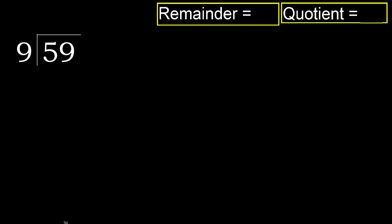59 divided by 9. 5 is less, therefore next. 59 is not less, therefore with 59.